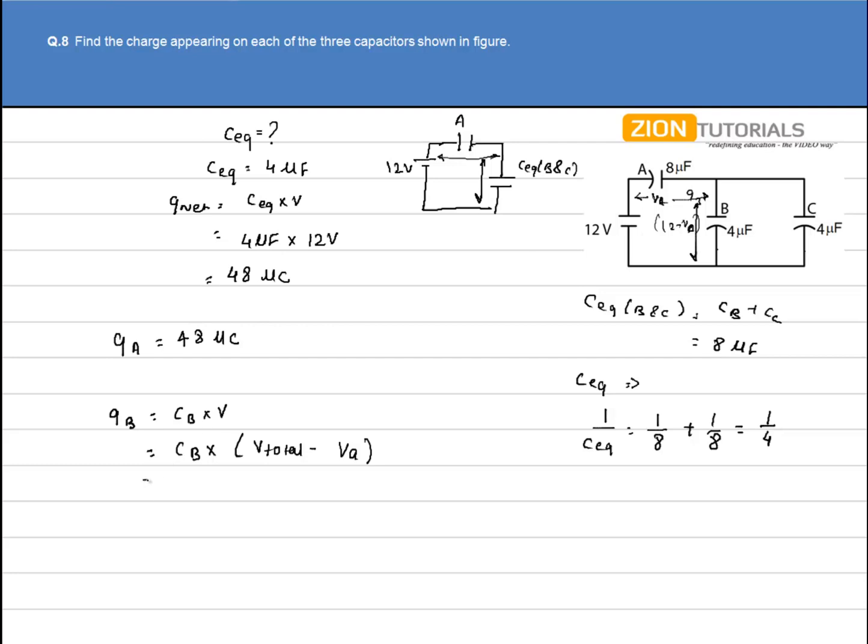We have CB as 4μF, V total was 12, voltage A comes out to be 6. This Va can be calculated by Q by C - that is, charge is 48μC and we have capacitance as 8μF which comes out to be 6V. So on solving we get 4μF into 12 minus 6, that is 6, which gives 24μC charge.